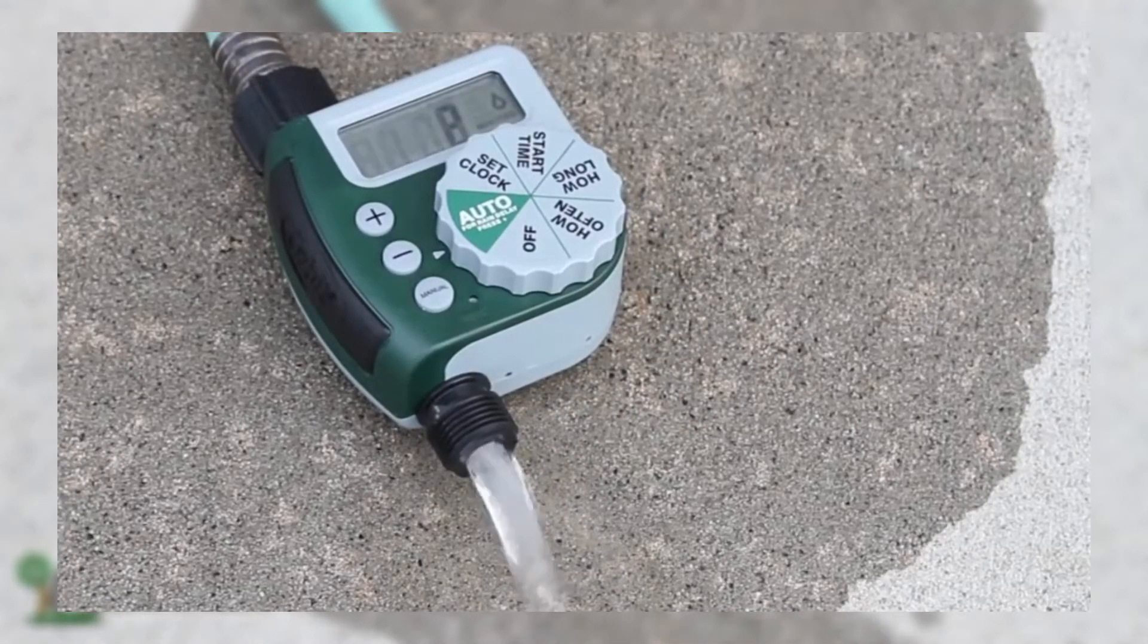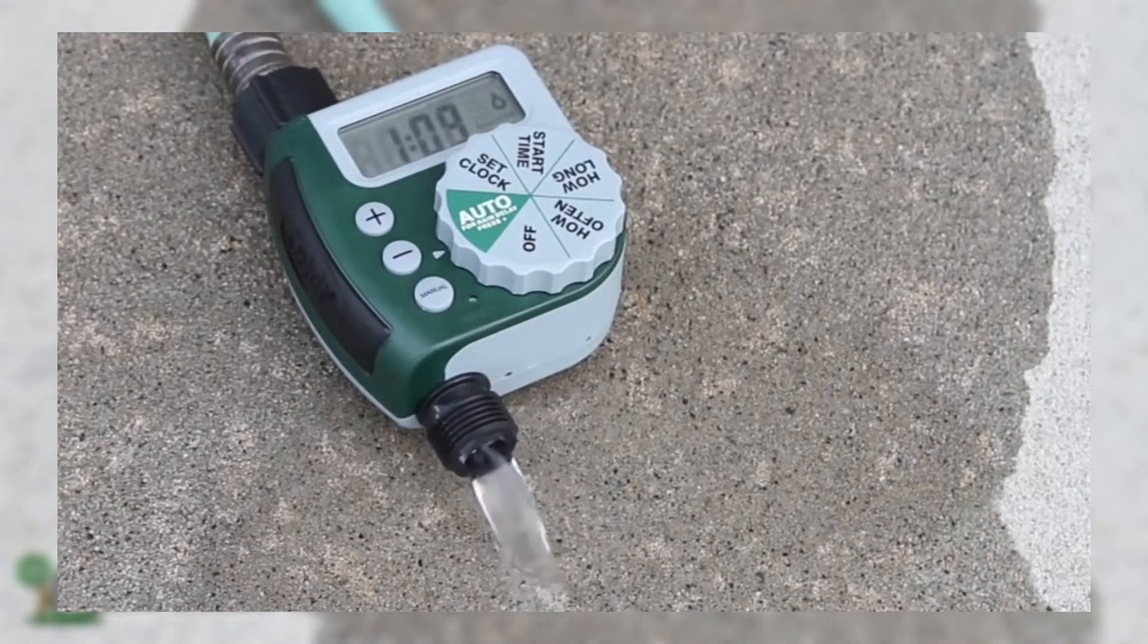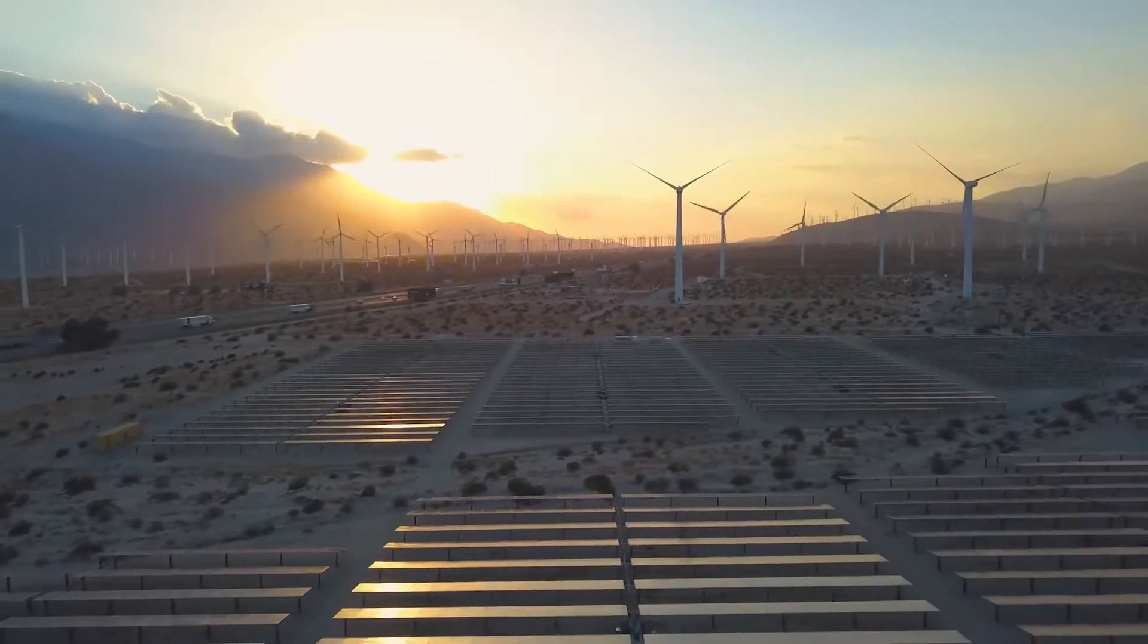In this video, I will show you how to make a simple low-power sprinkler timer that you can power with solar. Let's go off-grid.